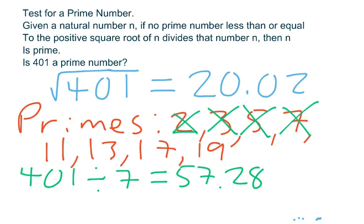And it will turn out, in fact, that 401 is not divisible by any of these numbers. And if 401 is not divisible by any of the prime numbers less than or equal to the positive square root of the number itself, then the conclusion you have to draw is that the number 401 is prime. Thank you very much.